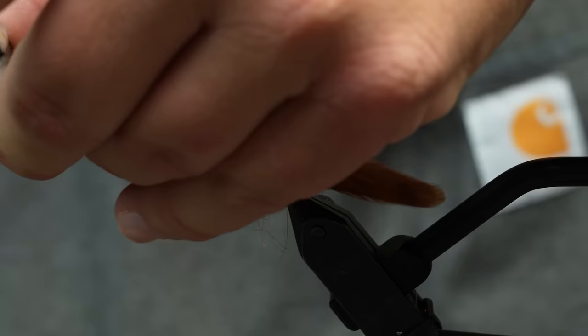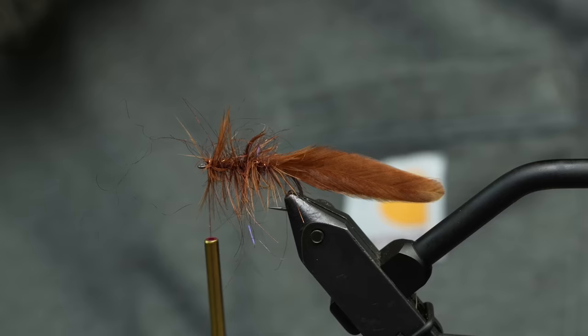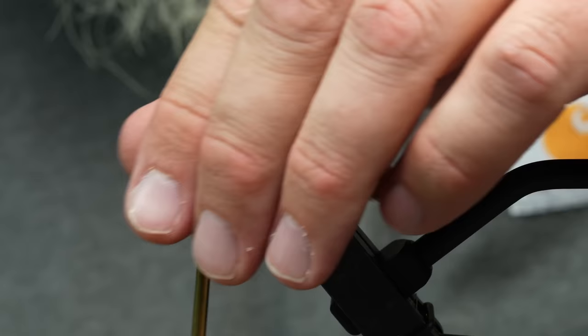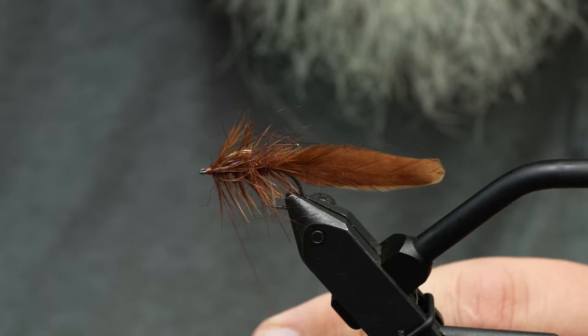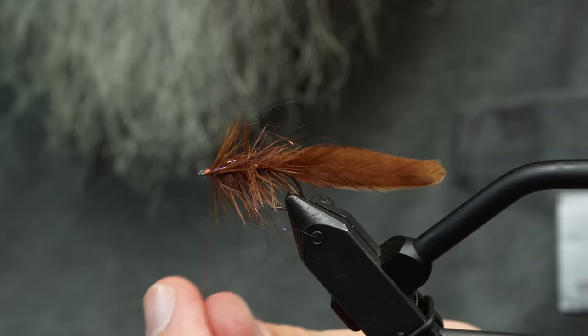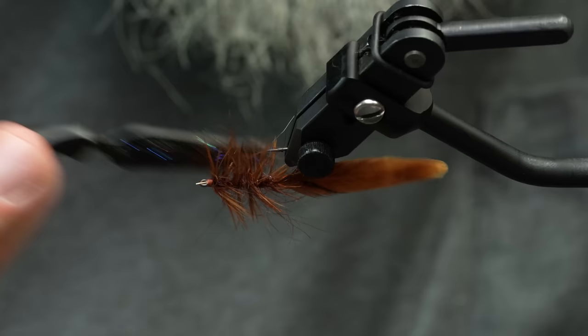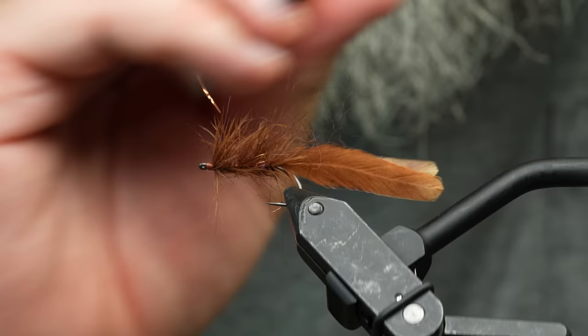So I'm gonna twist that up. Nice and messy just like a leech. Yes, you could wrap that and fish it just like that as a leech. So once I have that, this twister, if I squeeze that together it opens up. So I'm gonna open that up and grab that feather. Just lock that bad boy down in there and then I'll twist those up together. Not very much, that's usually all we need.